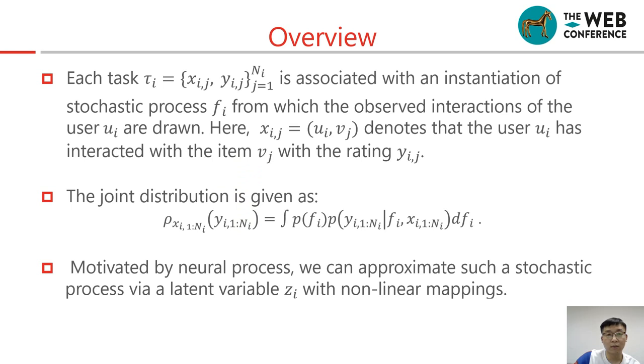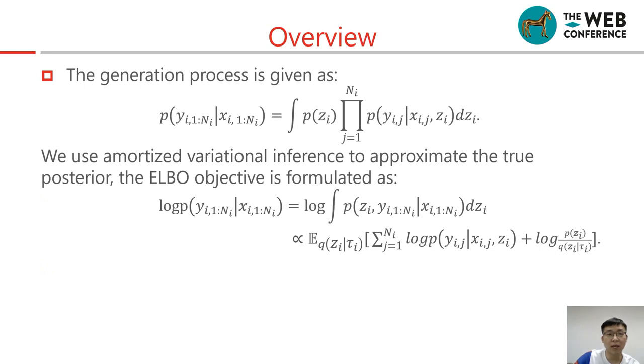In our concrete implementation, each task is associated with an instantiation of the stochastic process fi from which the observed interactions of the user ui are drawn. Here, xig denotes that the user ui has interacted with the item vg with the rating yig. The joint distribution is given as here. Motivated by neural process, we can approximate such a stochastic process with a latent variable zi with non-linear mapping. The generation process is given as here. We use amortized variational inference to approximate the true posterior. The ELBO objective is formulated as follows.